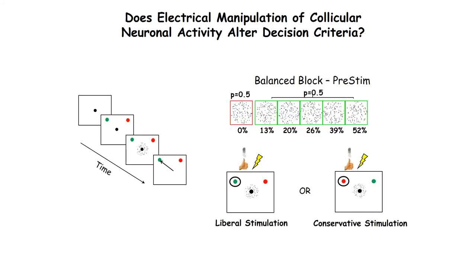Trinity measured choice performance in the monkeys for the same decision task, but instead of introducing sensory motor priming by changing the stimulus frequencies, he introduced sub-threshold electrical stimulation to the superior colliculus on 50% of the trials when the no target was in the stimulation field for conservative priming and when the yes target was in the field for liberal priming.